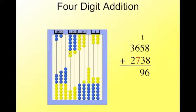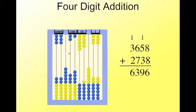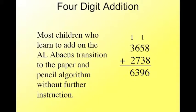700. 700. Do I need to trade? Yes. So, I'm going to trade these 10 hundreds for this bead that represents 1,000. And record. How many hundreds? I have 3. And what else did I do? I gave myself another 1,000. I'm going to put the mark right up there. 2,000. 2,000. And record. How many do I have all together? 6,000. There's my answer. This helps the children understand, using place value, how the four-digit addition with caring works. Most children who learn to add on the AL abacus transition to the paper and pencil algorithm without any further instruction.